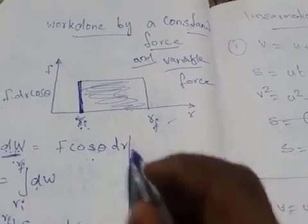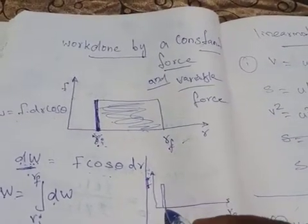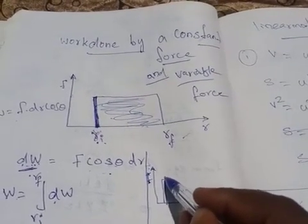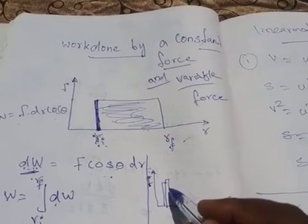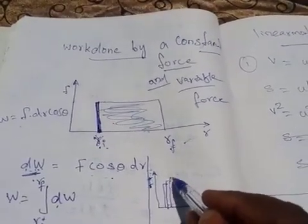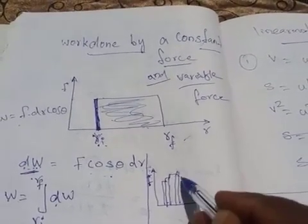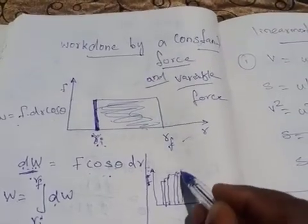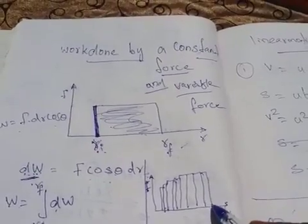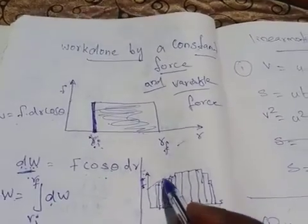When you apply a variable force on an object — for example, applying a little more force gives a little more displacement, then again increasing the force gives more displacement — and reducing the force reduces displacement. Like that, as the force varies, the displacement also varies, and you will get a curved graph.